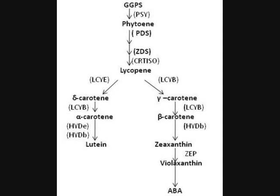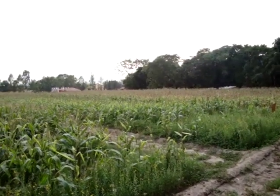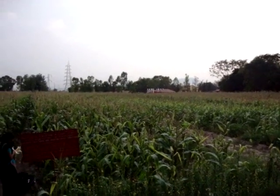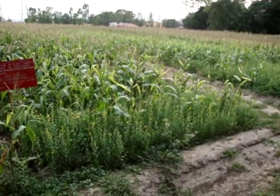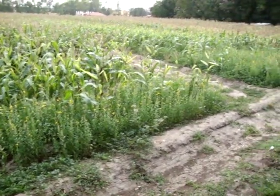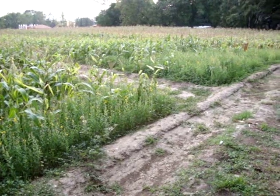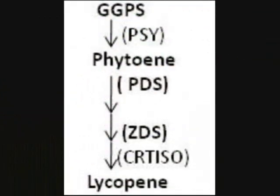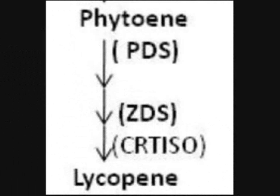In higher plants, all steps of carotenoid biosynthesis occur in plastids by enzymes coded by nuclear genes and imported into the organelle post-translationally. In this pathway, the key regulatory step is mediated by phytoene synthase and involves the condensation of two geranylgeranyl pyrophosphate molecules to form a colorless compound called phytoene. The phytoene is then converted to all-trans lycopene.